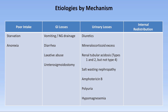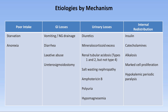The final category comprises etiologies causing internal redistribution from the extracellular to the intracellular space. Typical causes include insulin, catecholamines — most typically during critical illness or use of exogenous vasopressors — and alkalosis. Less typical causes include marked cell proliferation, as can occur during initial treatment of severe vitamin B12 deficiency. Finally, there is the rare muscular disorder hypokalemic periodic paralysis, characterized by episodes of painless muscle weakness triggered by exercise and either fasting or a high-carbohydrate meal.